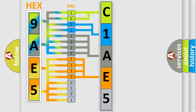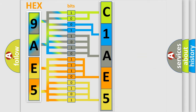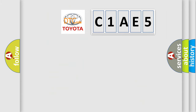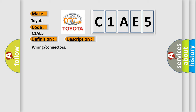A single byte conceals 256 possible combinations. We now know in what way the diagnostic tool translates the received information into a more comprehensible format. The number itself does not make sense to us if we cannot assign information about what it actually expresses. So, what does the diagnostic trouble code C1AE5 interpret specifically for Toyota car manufacturers? The basic definition is: crash signal not plausible. Here is a short description of this DTC code: wiring connectors.